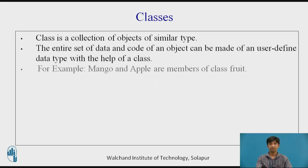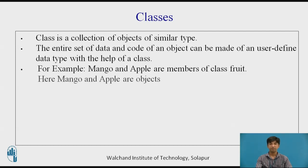A class is thus just a collection of objects of similar type. For example, mango and apple are members of the class fruit — here mango and apple are objects. Another example: TVS Vigo and Honda Activa are members of the class two-wheeler vehicle. Classes are nothing but user-defined data types and behave like built-in data types of a programming language.